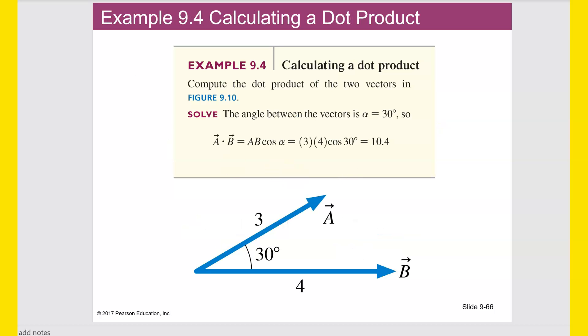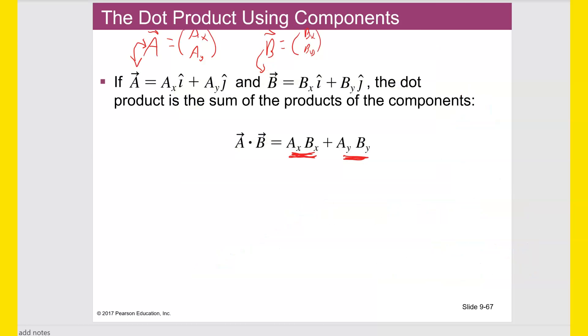And then finally, if A and B are pointing in exact opposite direction, so alpha is 180 degrees, then A dot B would be the same thing as if they were pointing in the exact same direction, except it would be the complete opposite sign. It would be negative A times B. Okay. Here's an example. Compute the dot product of two vectors, the two vectors in this figure. That's very simple.